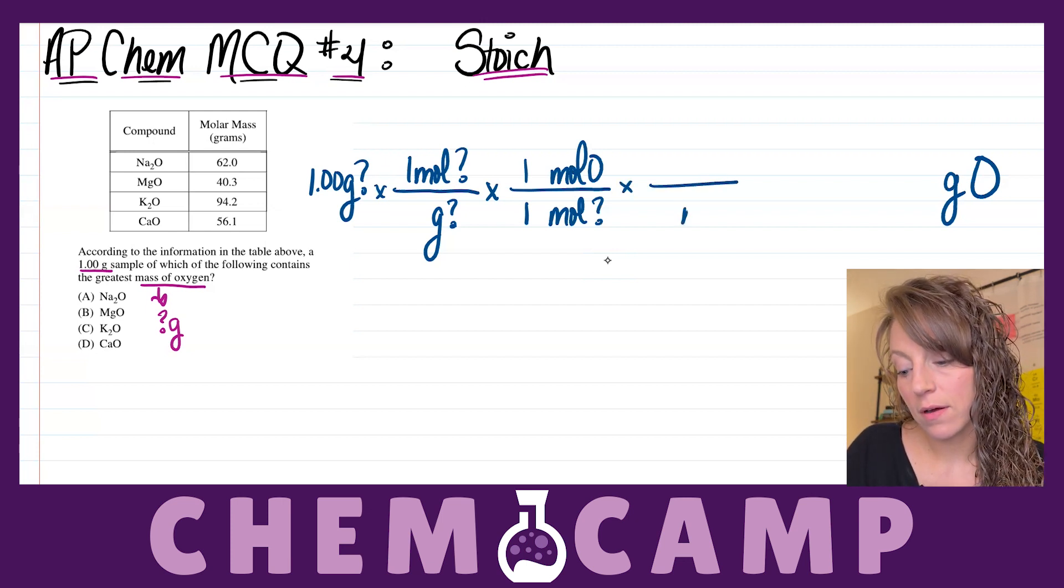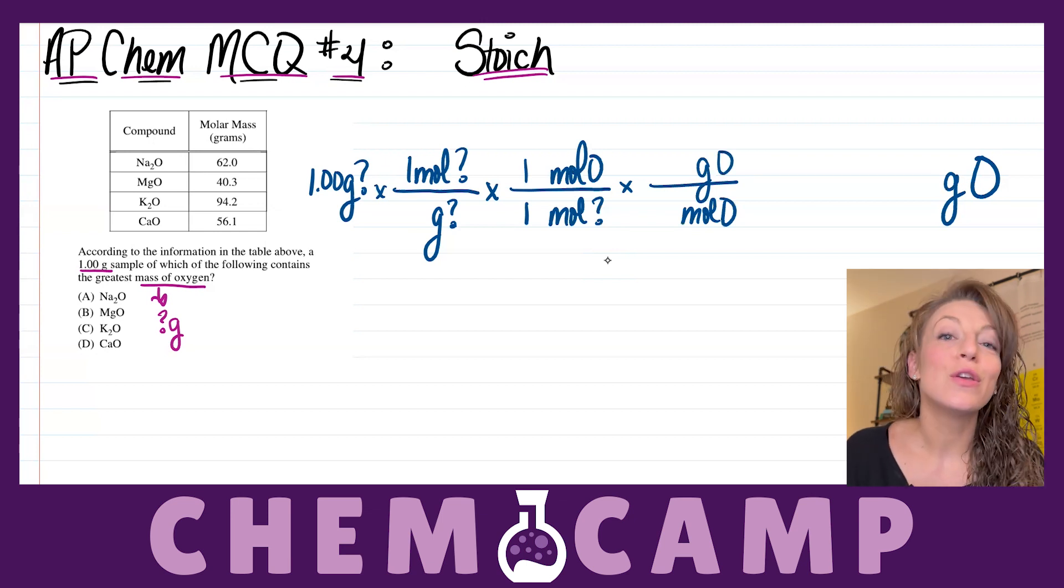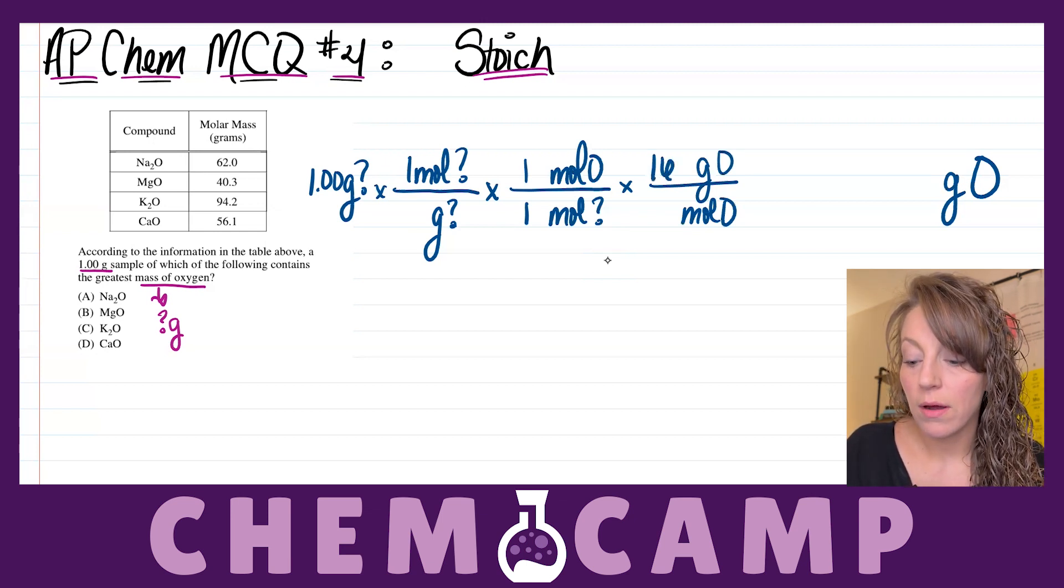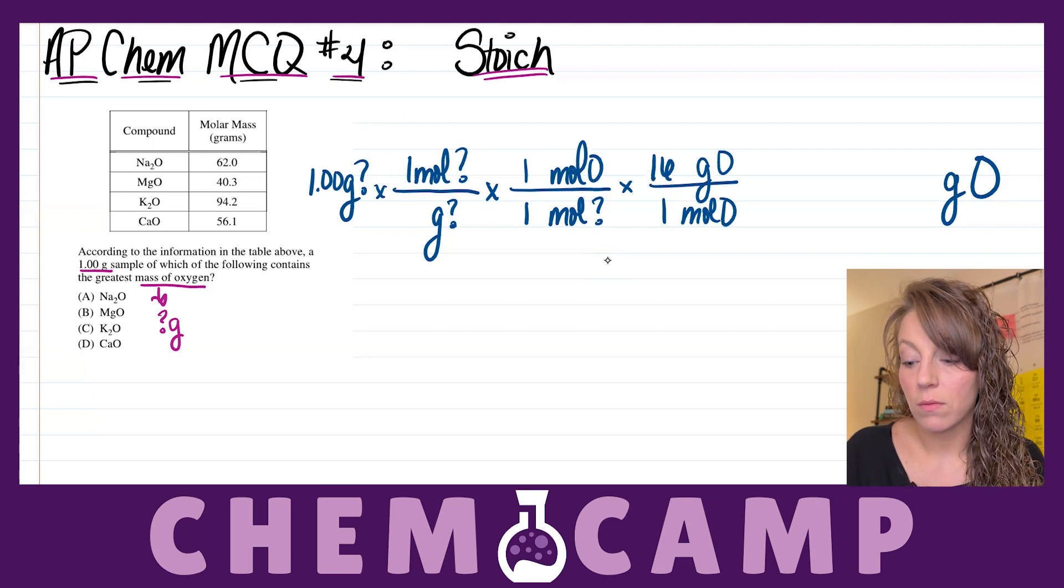And then I can convert from moles of oxygen to grams of oxygen using oxygen's molar mass where I have 16 grams for every one mole.